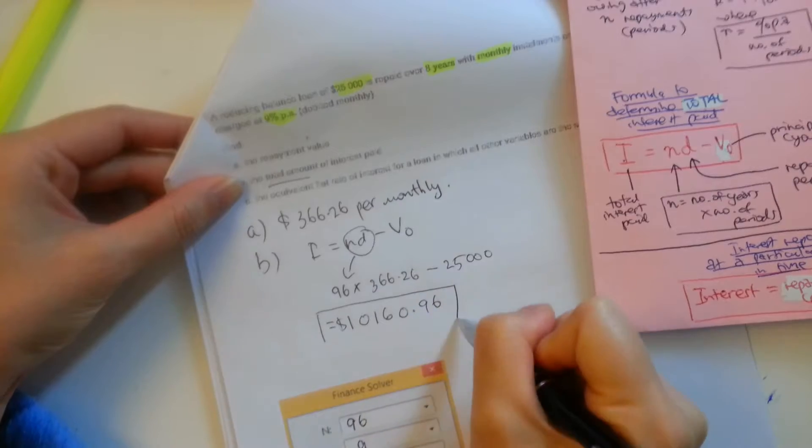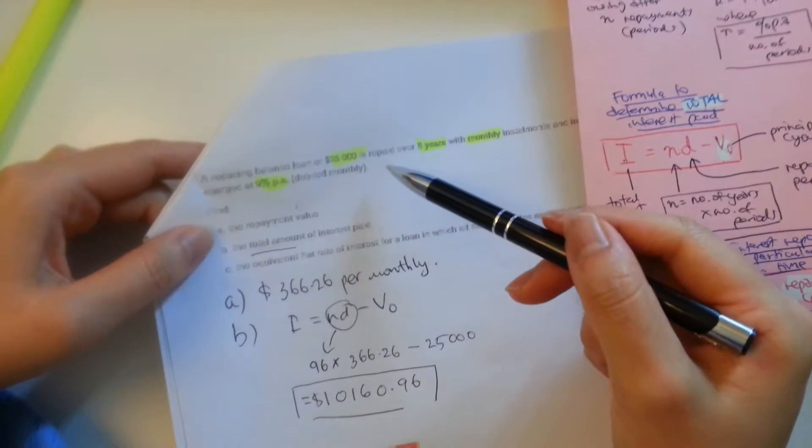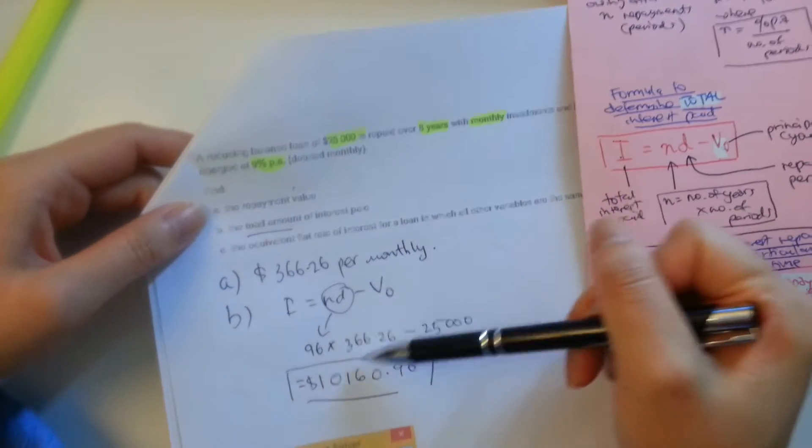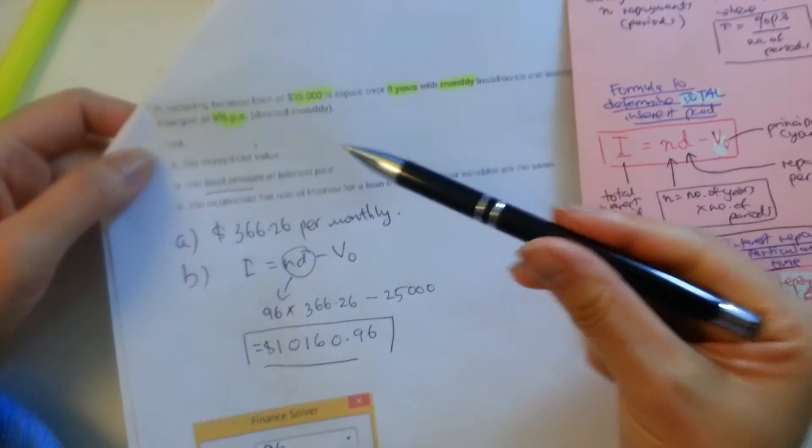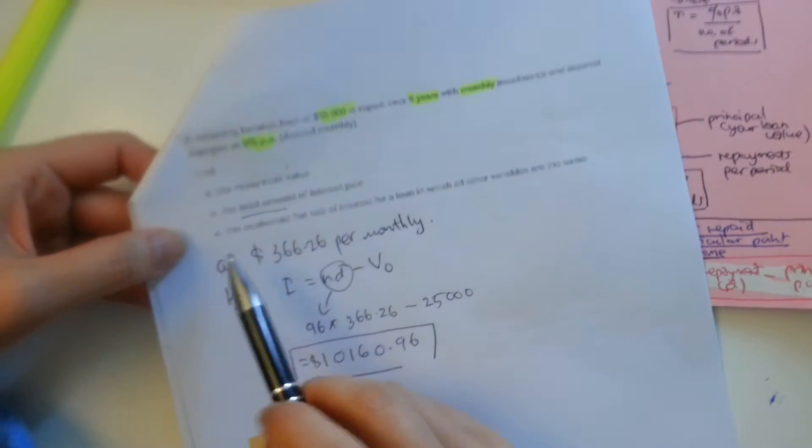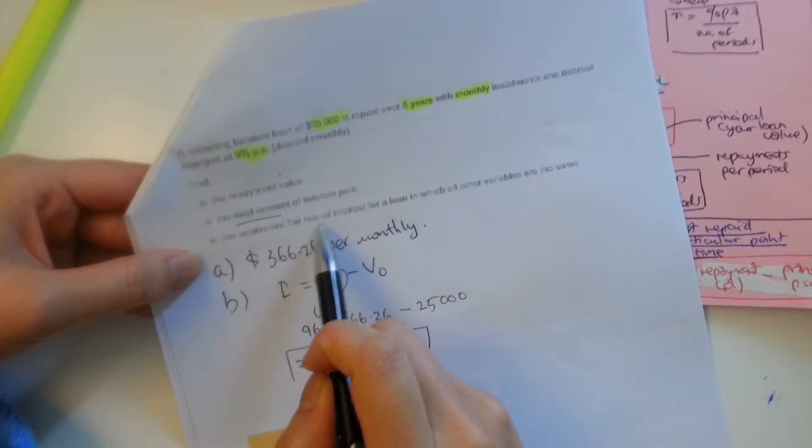So to take out a, that's a lot of money, to take out a $25,000 loan in eight years, you'll be paying more than $10,000 in interest. So that's B for you. So now for C, C is asking, if you read the question carefully, the equivalent flat rate of interest.